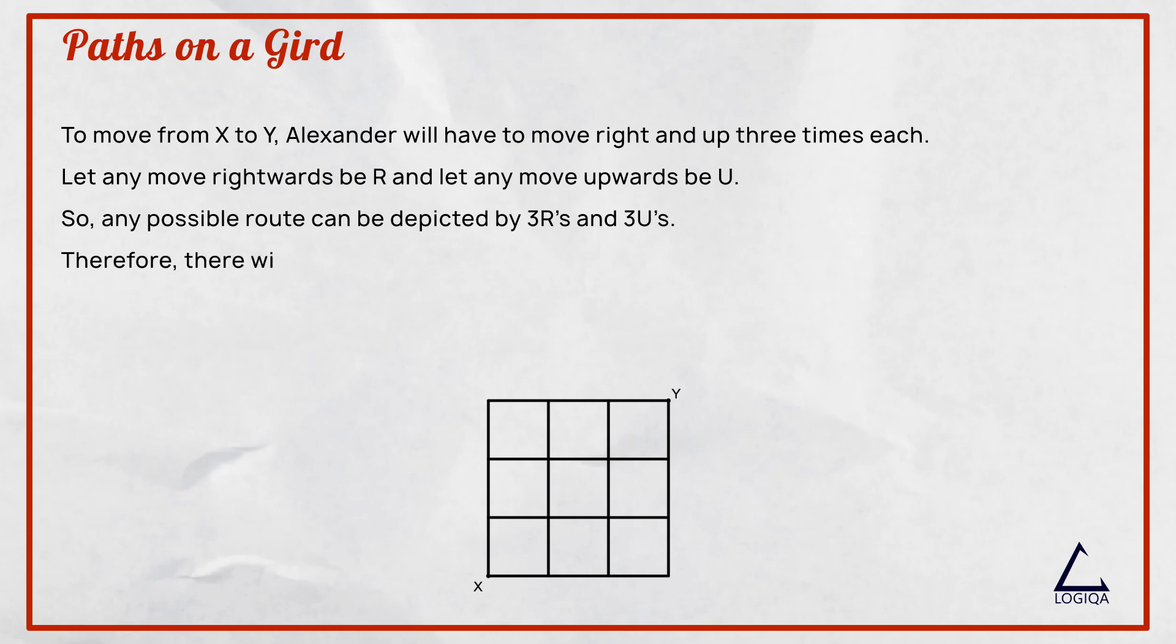Therefore, there will be a total of 6 letters out of which 3 will be R's and 3 will be U's. Therefore, the total distinct paths equals 6C3, which is equal to 20 distinct paths.